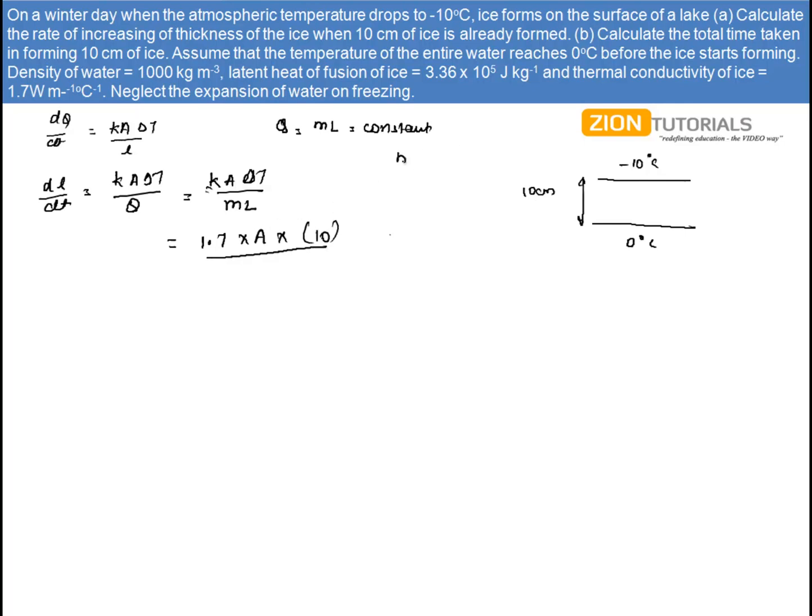Mass is given by density into volume. And it can be written as volume is area of cross section into length. So it is A into L. So substituting the value, density is 1000, A is A, length is 10 cm.